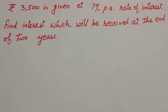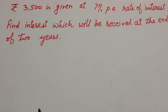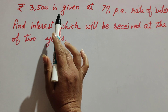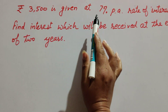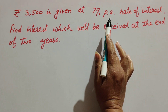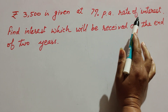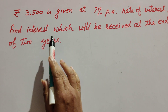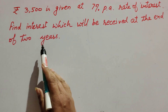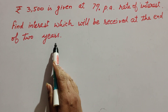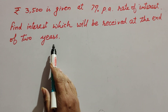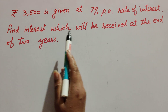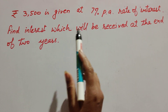Hello friends, welcome to my channel. In this video we discuss: rupees 3500 is given at seven percent per annum rate of interest. Find the interest which will be received at the end of two years. So in this question we have to find the interest received after two years.